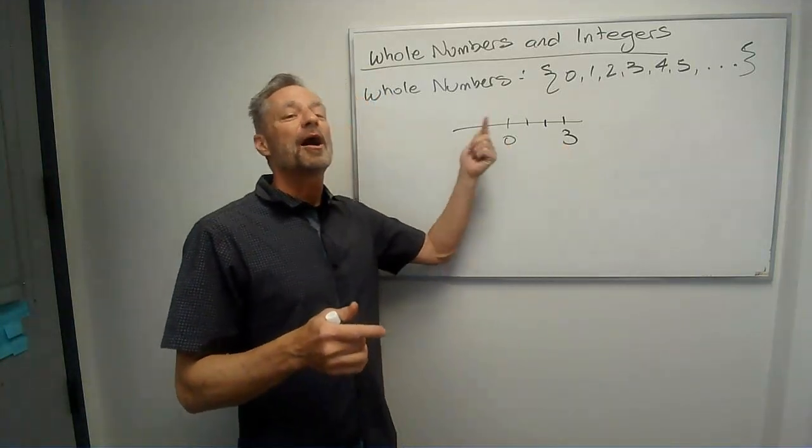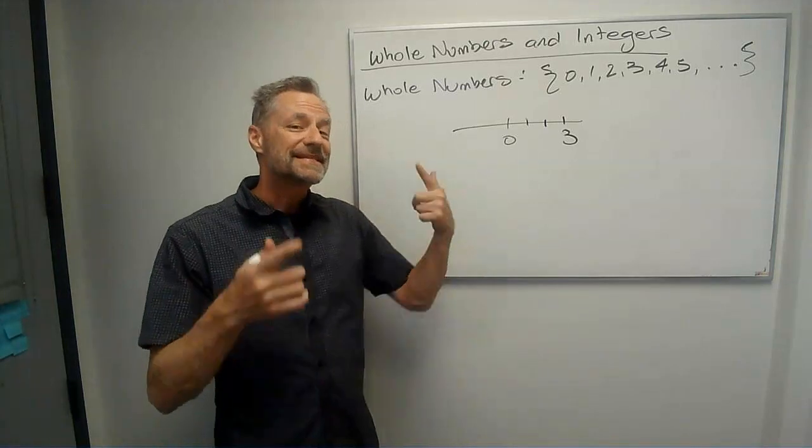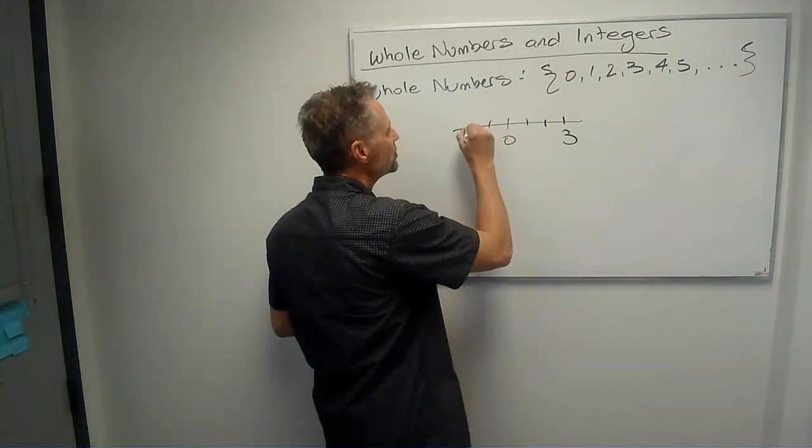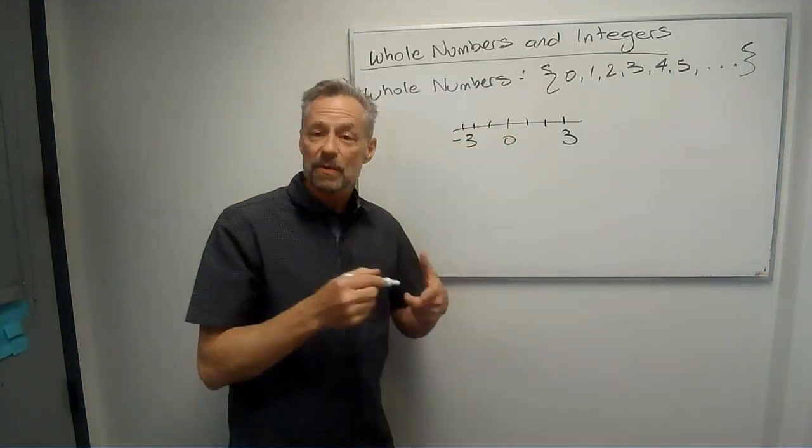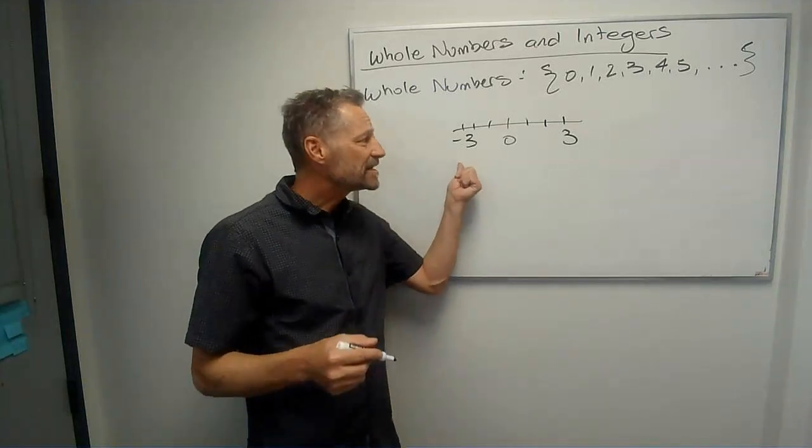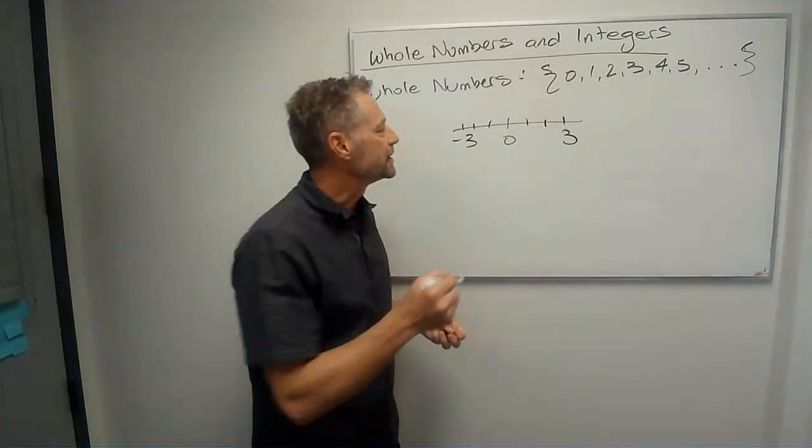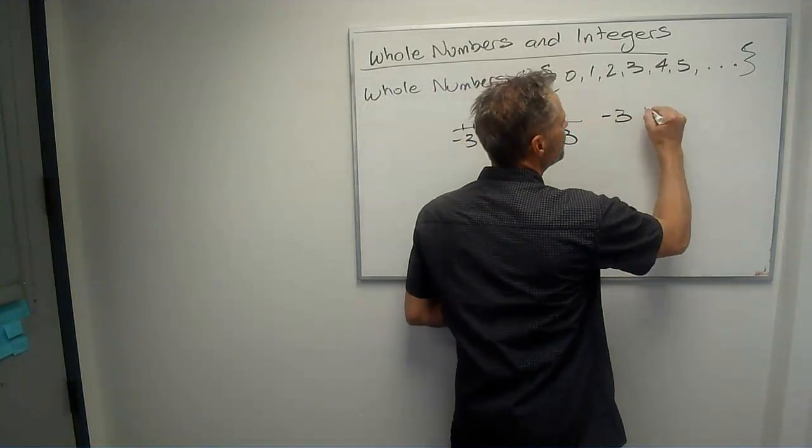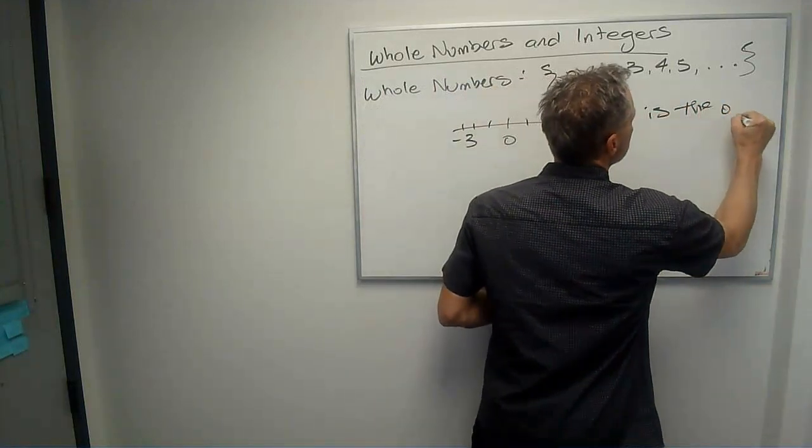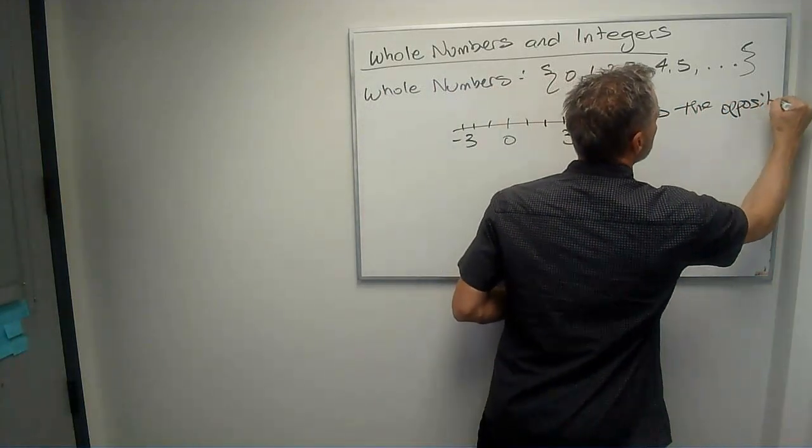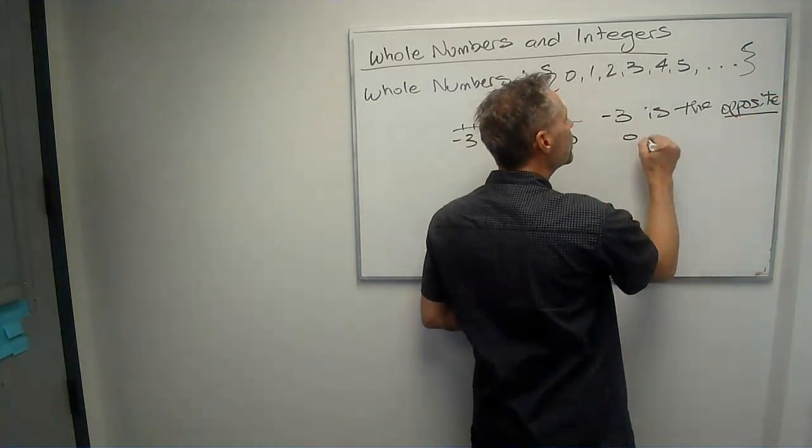So if we go the opposite side of 0, the same 3 units, 1, 2, 3, we get what we call negative 3. And so negative 3 is what we call the opposite of 3. Negative 3 is the opposite of positive 3.